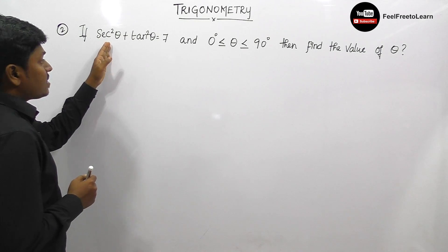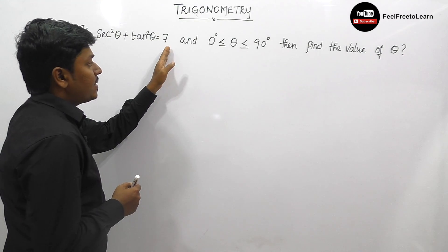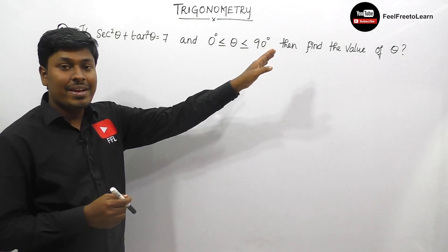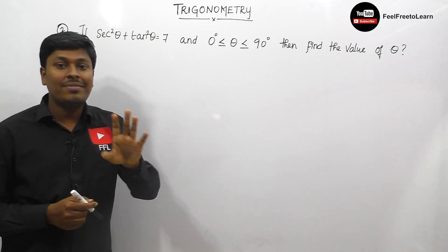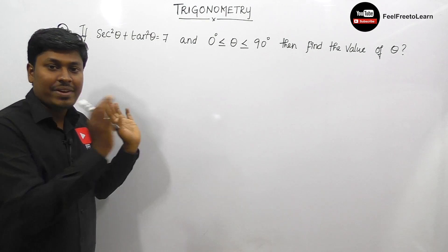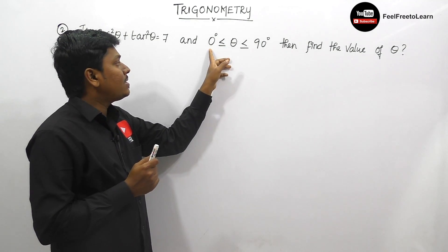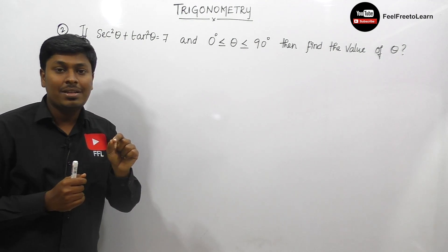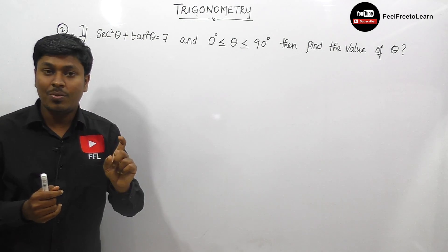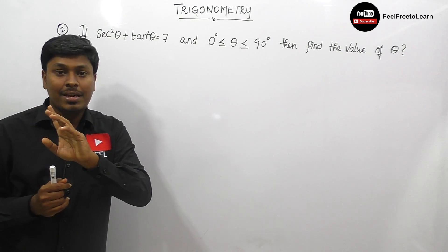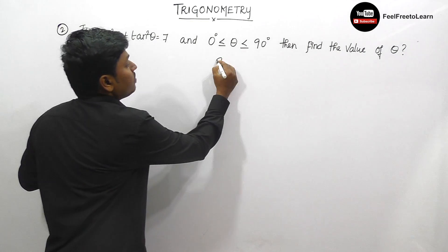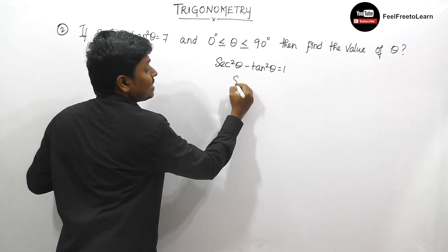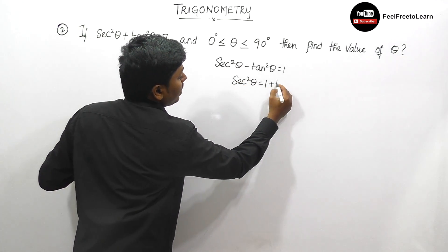Question number 2: if sec²θ plus tan²θ equals 7, and 0° ≤ θ ≤ 90°, find the value of theta. Before solving, you should know the formula: sin²θ plus cos²θ equals 1, and importantly sec²θ minus tan²θ equals 1. Both are most important formulas. From this, sec²θ equals 1 plus tan²θ.